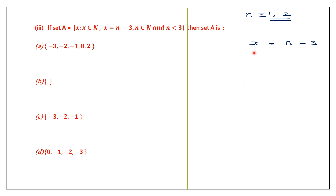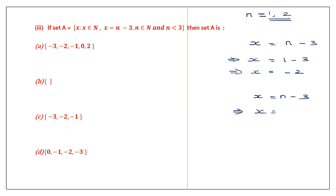We find the value of X by substituting n with 1 and 2. When n equals 1: X equals 1 minus 3, which is minus 2. When n equals 2: X equals 2 minus 3, which is minus 1. So we have found X is minus 2 and minus 1. But very importantly, the question says X belongs to natural numbers — which are all positive numbers — but these are negative numbers. So these cannot be in the set; this set has no element. It is an empty set, which is option B.